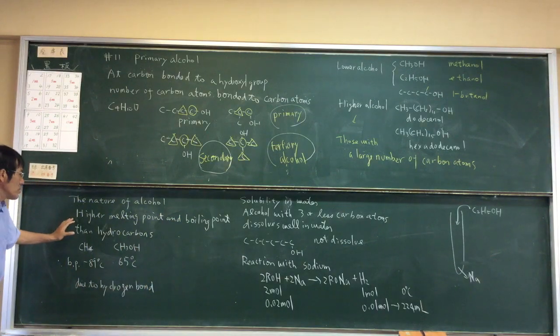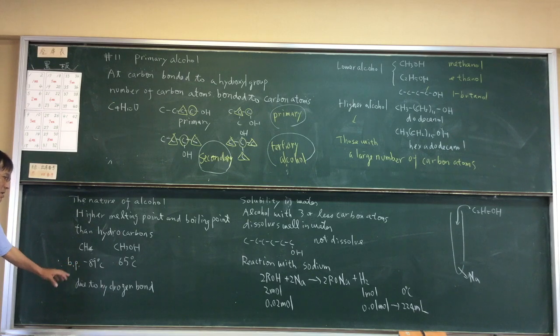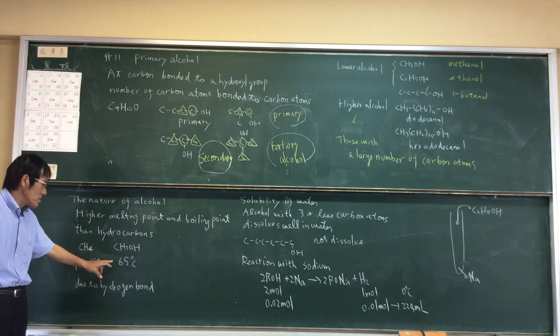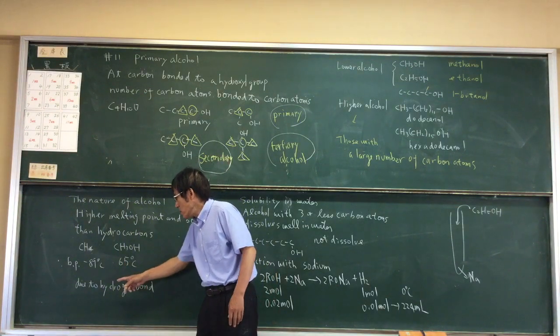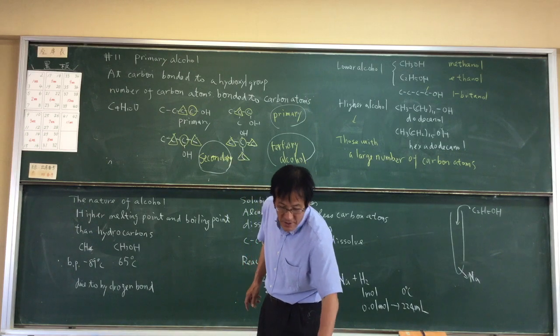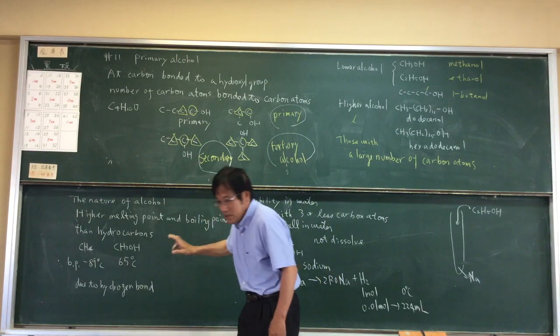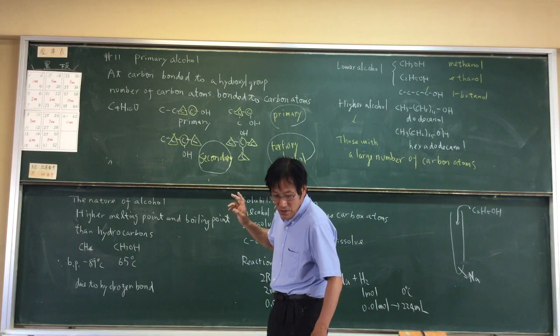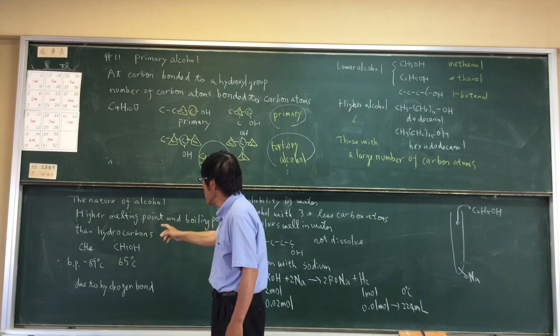The nature of alcohol is higher melting point and boiling point than hydrocarbons. For example, methanol is minus 89 degrees Celsius but boiling point is 65 degrees Celsius. Due to the hydrogen bond, the intermolecular force becomes stronger, so high melting point and boiling point becomes higher.